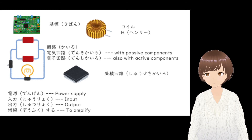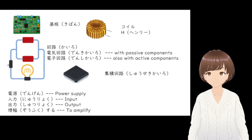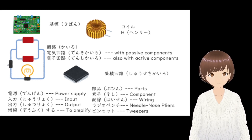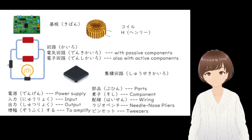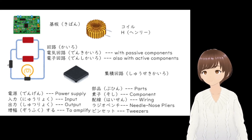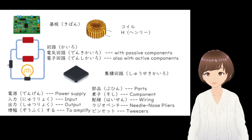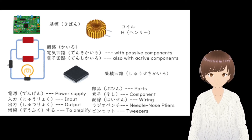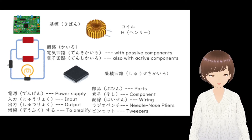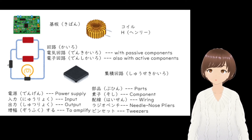Zoufuku is a noun, but zoufuku suru means to amplify. Buhin means parts. Soshi means components. Haisen means wiring, but you can also say haisen suru to use it as a verb.